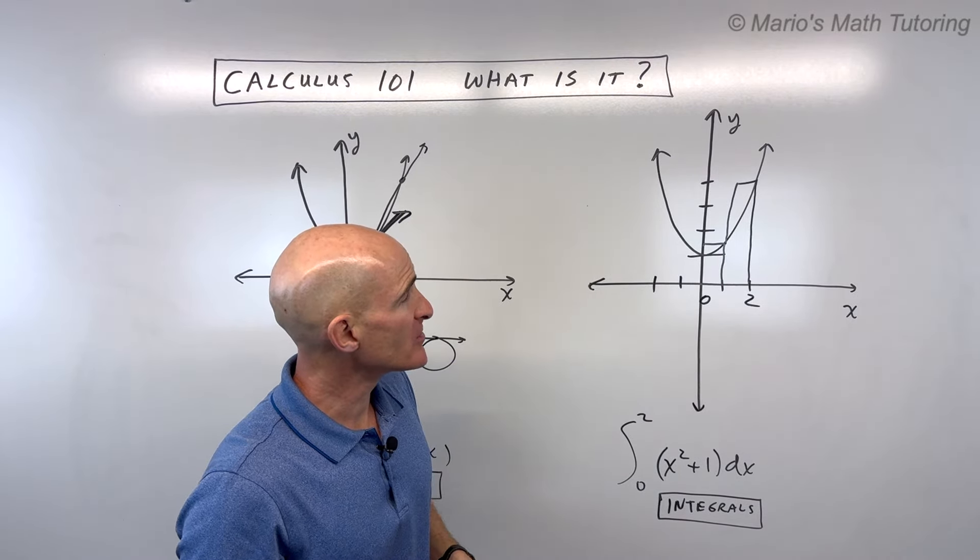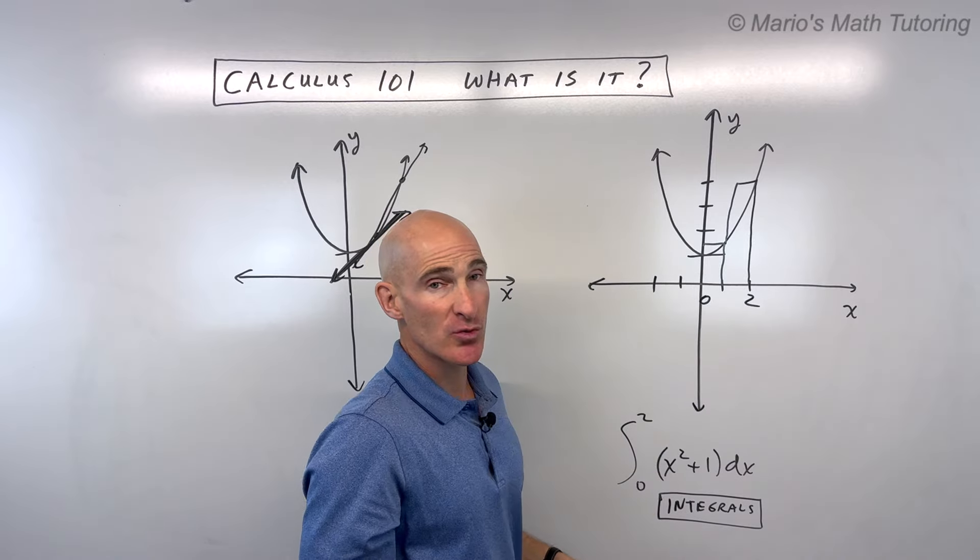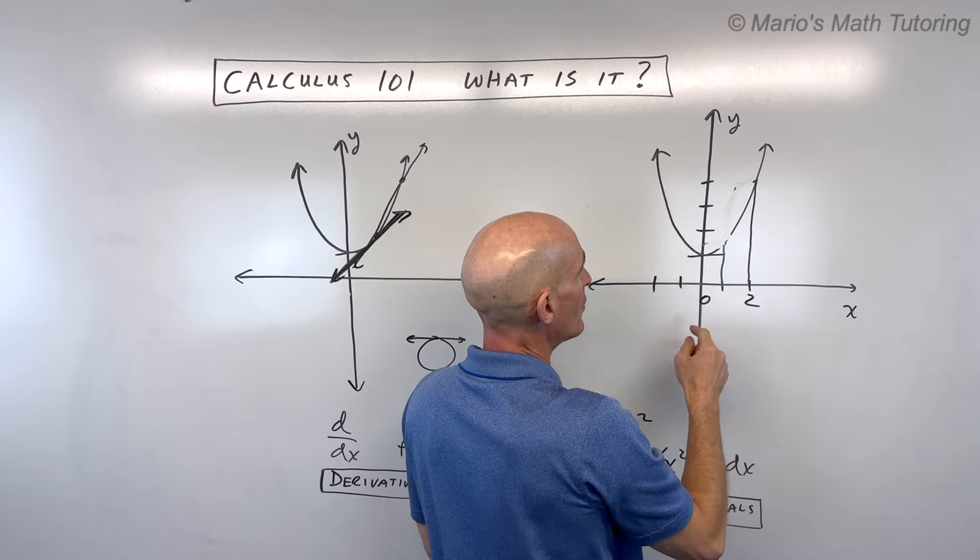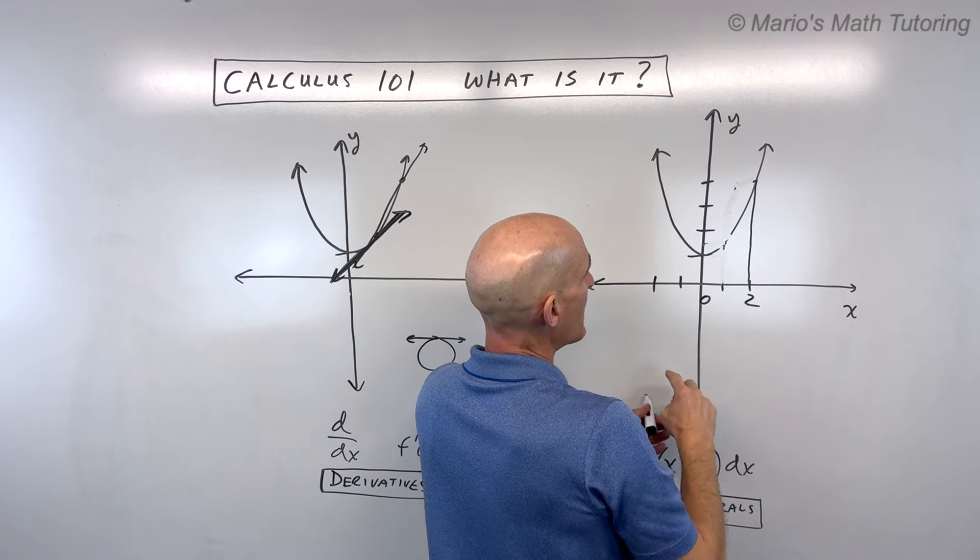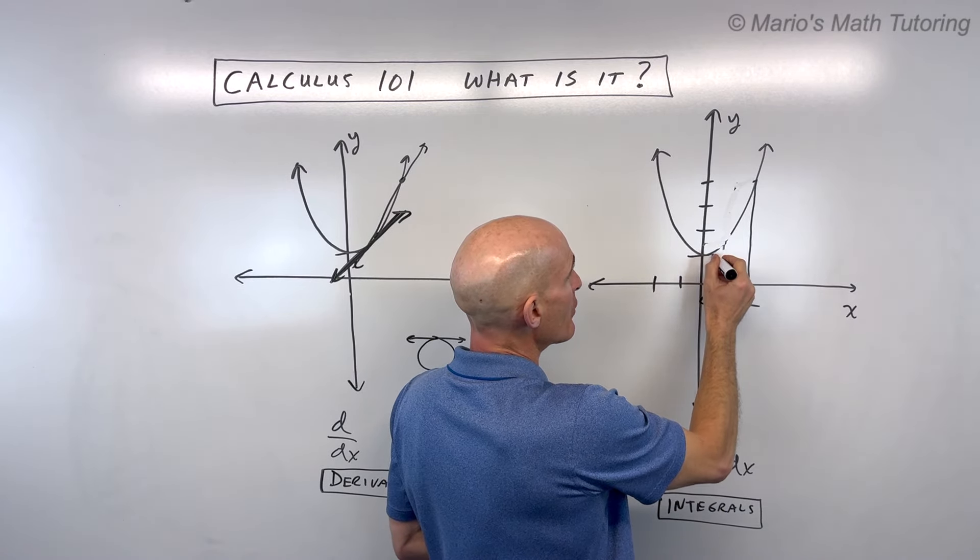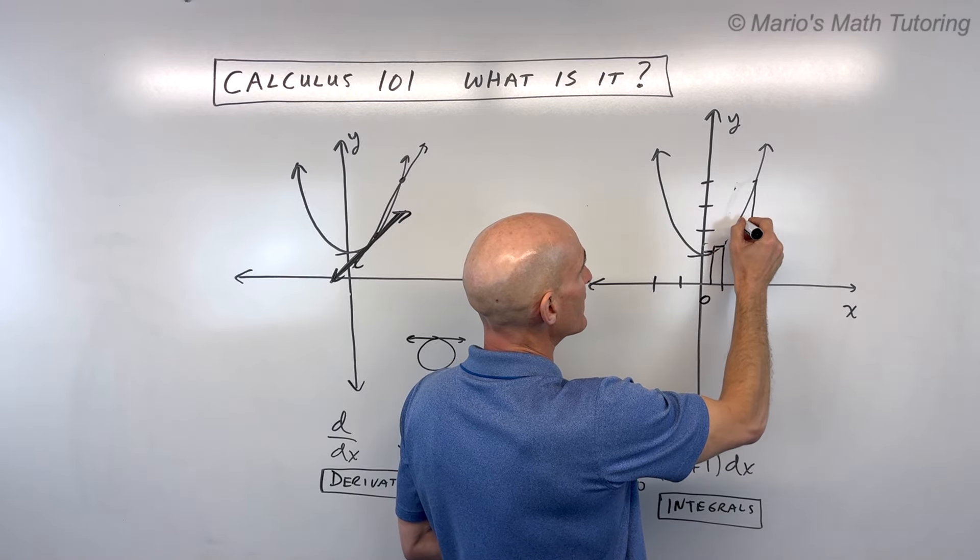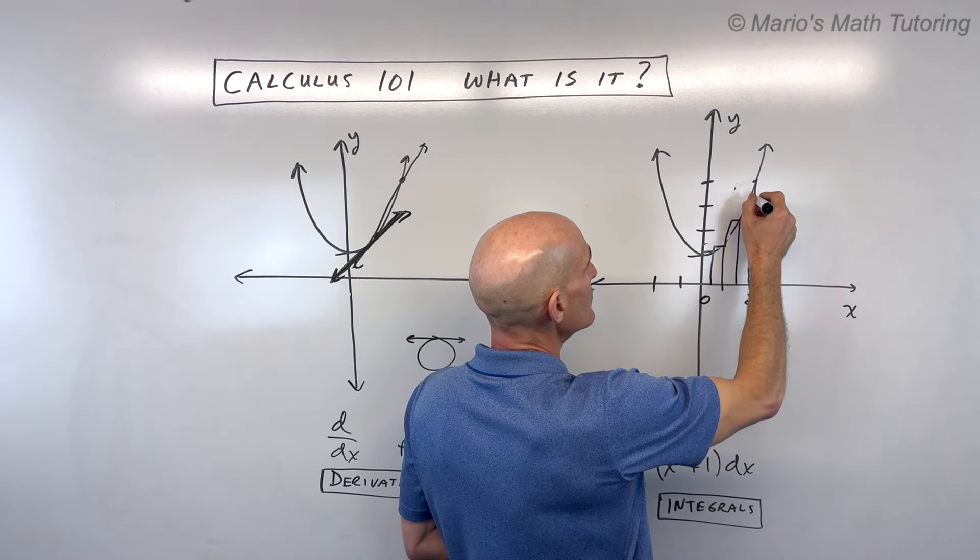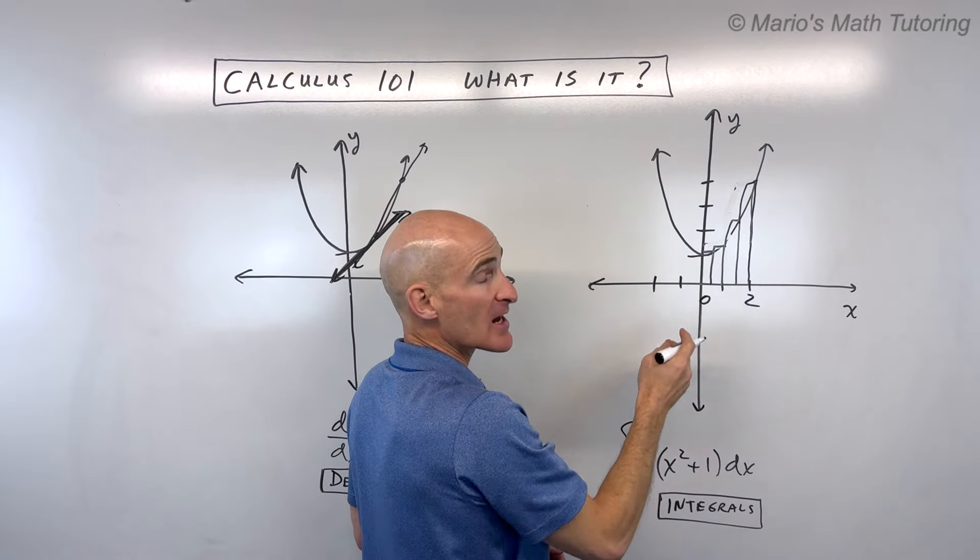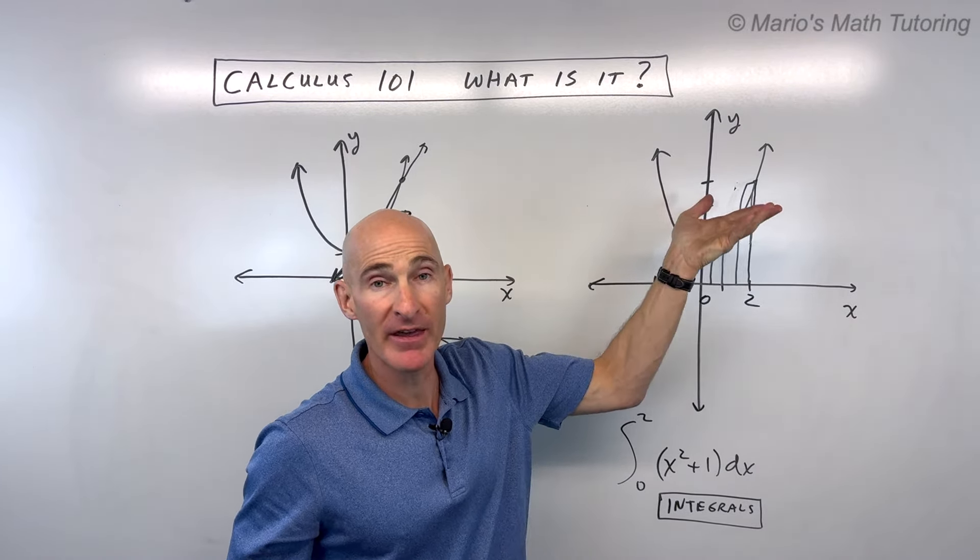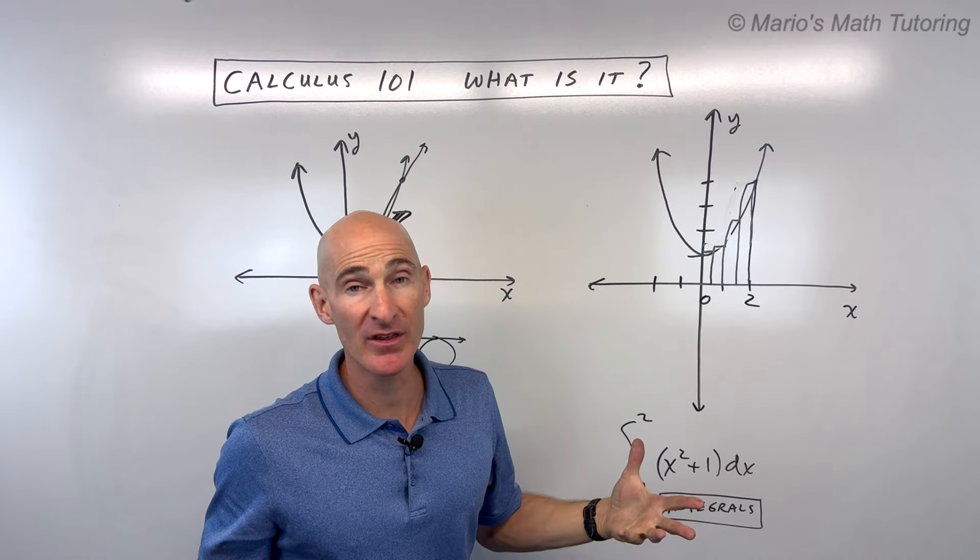But what you do in calculus is you say, well, that's two rectangles. What happens if I was to maybe make instead of two rectangles, four rectangles? Let's look at that example. Well, now what happens is the rectangles are getting thinner, or narrower you could say. But look what's happening. Now it's a little bit more closely approximating that area. It's still an over approximation. You can see this a little bit above that curve, so it's a little bit bigger than the actual area.